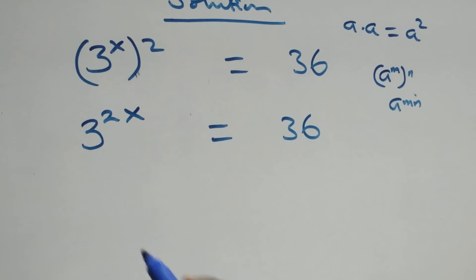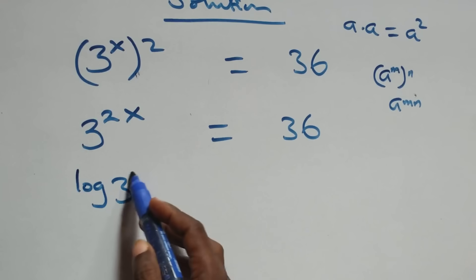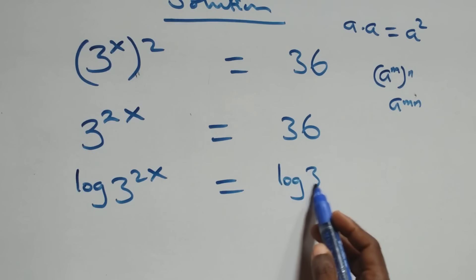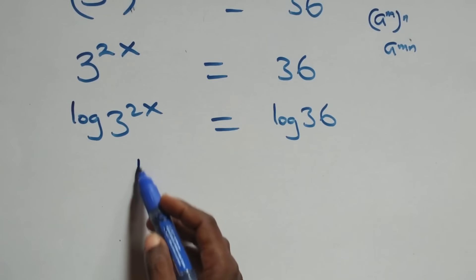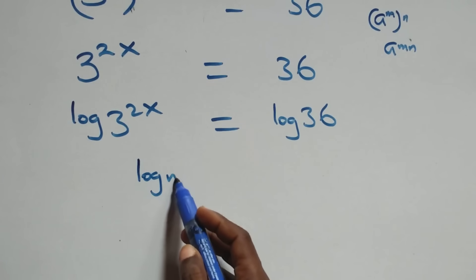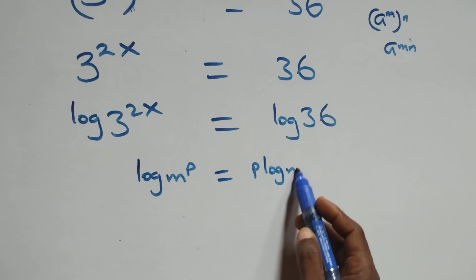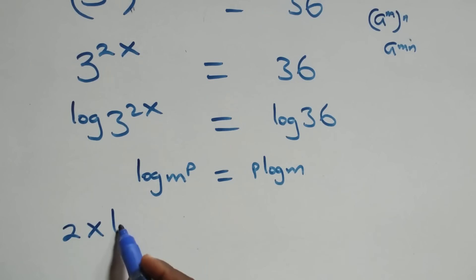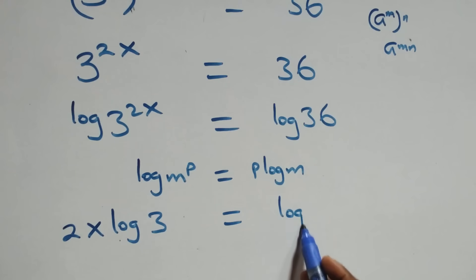At the next step, we take the log on both sides. Here we have log of 3 raised to power 2x equals to log 36 on this side. We apply the power rule of logarithm: log n raised to power p is the same thing as p·log n. So we have 2x·log 3 equals to log 36.